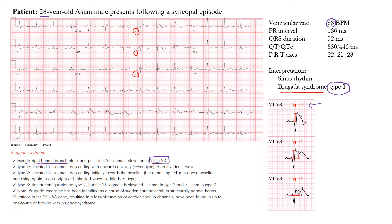In Brugada type 1, we see J point elevation that's greater than or equal to two millimeters. Using an ABCD framework from our course: point A shows ST or J point elevation of at least two millimeters. You can see that highlighted on the EKG.